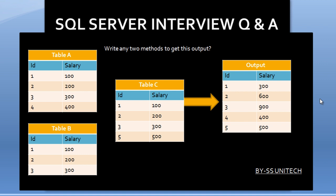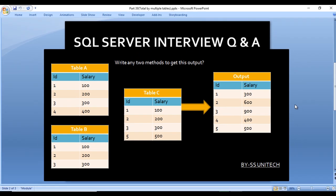As we can see in table A we are having ID1, then table B ID1, table C ID1. Salaries for ID1 are 100, 100, and 100 for each table. So in the output for ID1 we are having 300 — we are combining all salaries according to their IDs. But we can see we are having ID5, which is not available in table A and table B, only in table C. We also want those IDs which are available in any of these three tables. So how we can get the output by using SQL queries? Write any two methods to get the output.